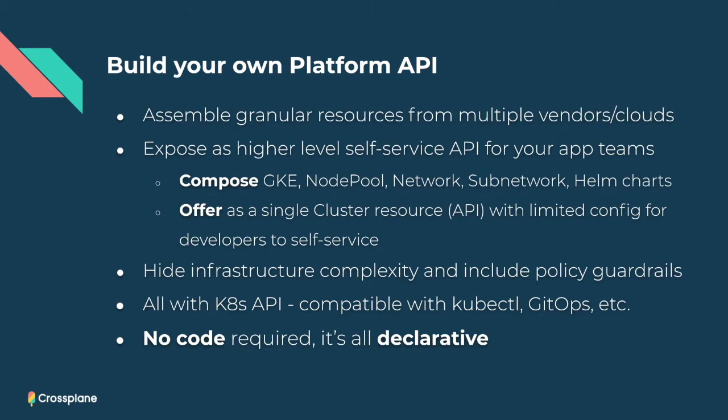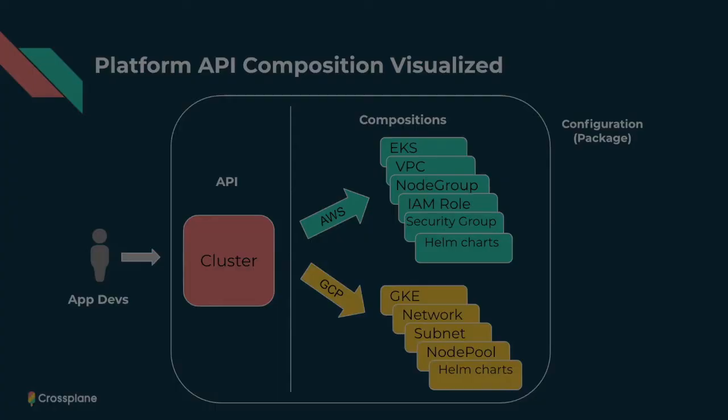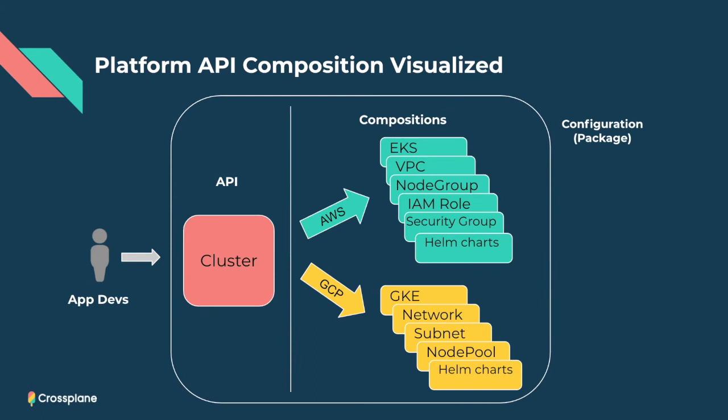All of this is done with the Kubernetes API, so it's compatible with anything that talks Kubernetes. And we don't have to write any code — this is all declarative. Our application developers only see the cluster object and the simple API we've surfaced for them. Behind that API line, we can have multiple compositions to fulfill what it means to be a cluster — for example, one for AWS and one for GCP, with all the specific cloud resources that make up a cluster in each environment.